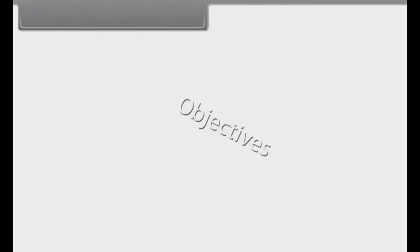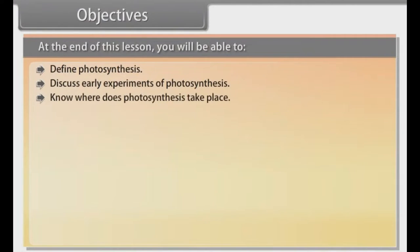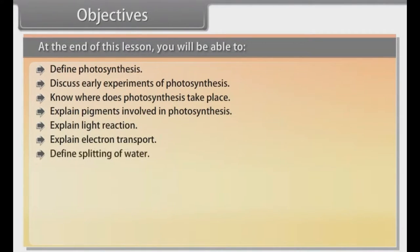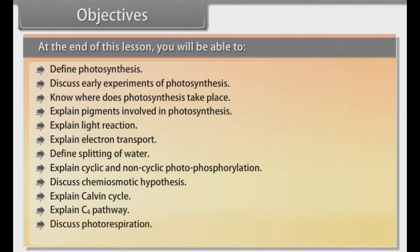Objectives: At the end of this lesson, you will be able to define photosynthesis, discuss early experiments, know where photosynthesis takes place, explain pigments involved in photosynthesis, explain light reaction, electron transport, splitting of water, cyclic and non-cyclic photophosphorylation, chemiosmotic hypothesis, Calvin cycle, C4 pathway, photorespiration, and factors affecting photosynthesis.